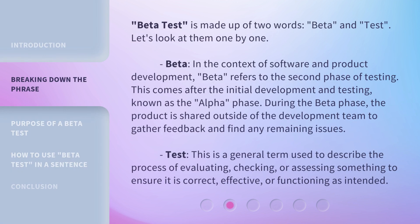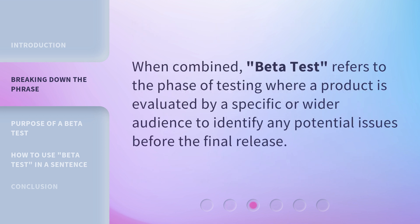Beta test is made up of two words: beta and test. Let's look at them one by one. Beta — in the context of software and product development, beta refers to the second phase of testing. This comes after the initial development and testing known as the alpha phase. During the beta phase, the product is shared outside of the development team to gather feedback and find any remaining issues.